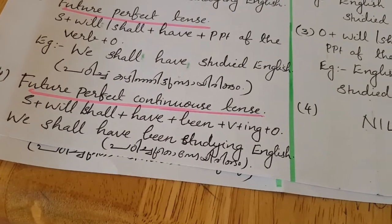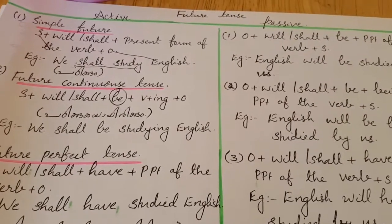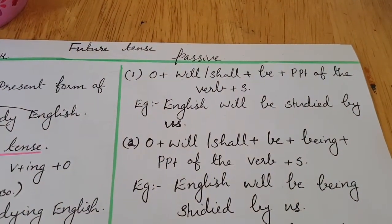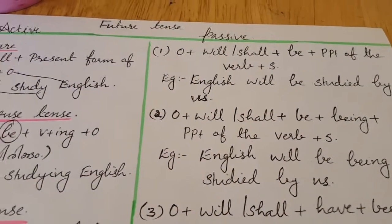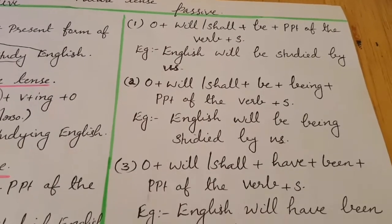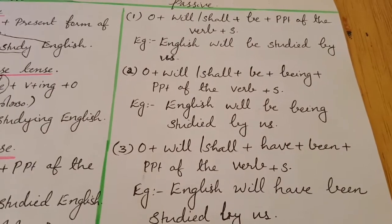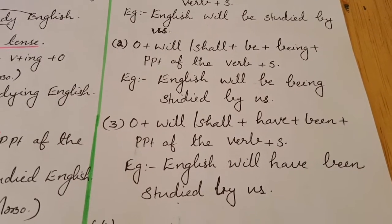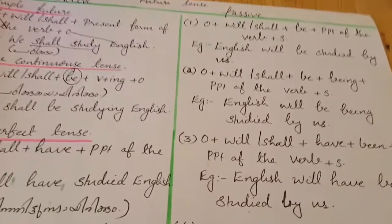The fourth form — future perfect continuous tense — has no passive voice. So, to recap the active to passive conversion for future tense: simple future passive is object plus will or shall plus be plus PPT plus subject; future continuous passive is object plus will or shall plus be plus being plus PPT plus subject; future perfect passive is object plus will or shall plus have plus been plus PPT plus subject. Fourth form has no passive voice.